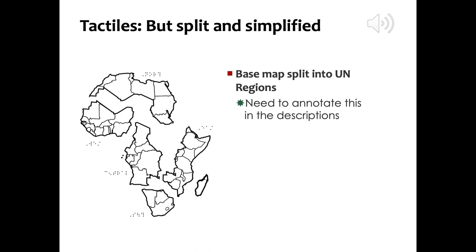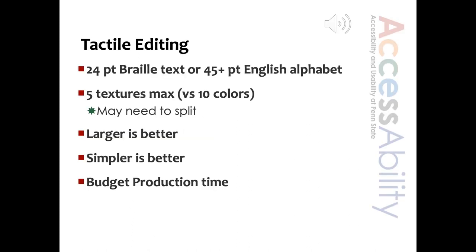Therefore, they decided to split the map into the different regions identified by the UN. One of the limits is text labeling. Most maps have text 12 points or smaller, but braille works best when it's 24-point text and more like 45 to 60 points for English letters. We can use textures such as dots or dashes to simulate colors, but only about five maximum. Therefore, we usually have to provide a long annotation of what is in the tactile, including any splits and abbreviations used.